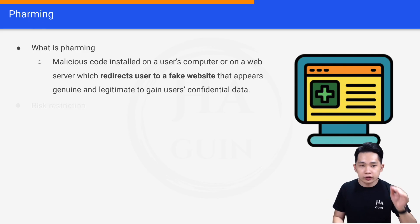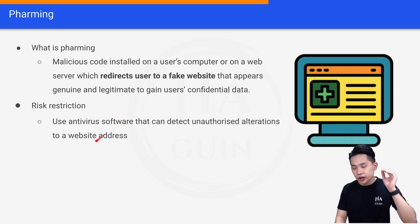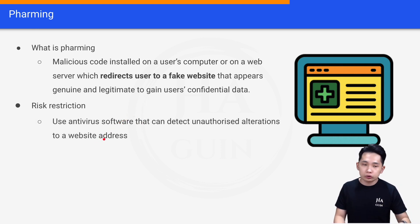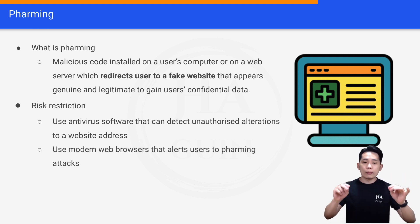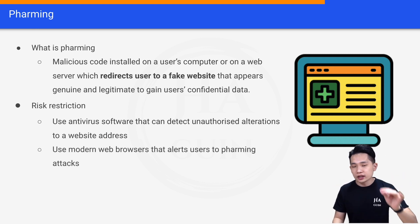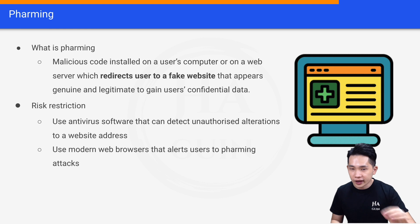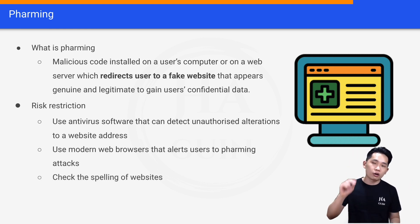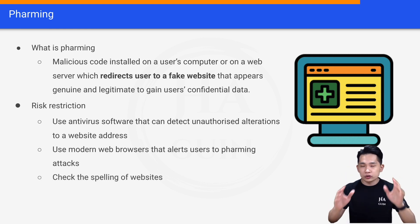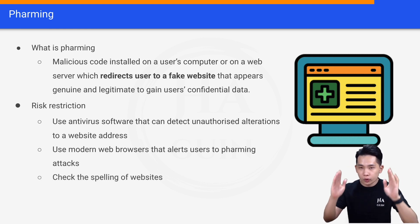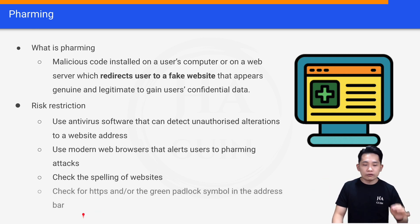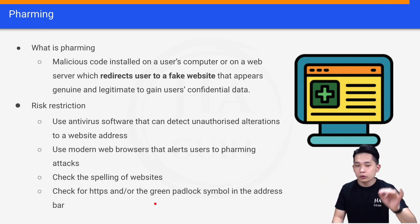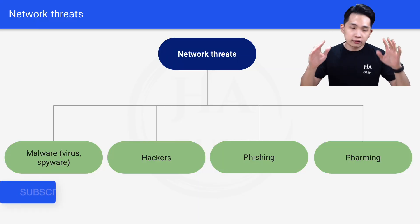To restrict the risk of pharming, you can use antivirus software that can detect unauthorized alteration to a website address. Use modern web browsers that alert users to pharming attacks. You can always check the spelling of the website to make sure it matches the original website address, and also check for HTTPS and the green padlock symbol in the address bar.